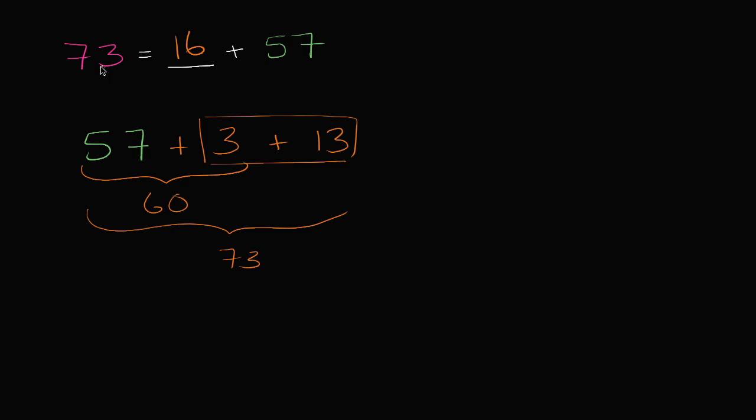Now there's other ways that you could try to tackle it. You could say, look, this blank is the difference between 73 and 57. So you could write this as 73 minus 57, minus 57 is equal to blank. And this would get you the same value. It would get you 16. And there's multiple ways to compute this. But this is the way that I would actually try to tackle this in my brain.